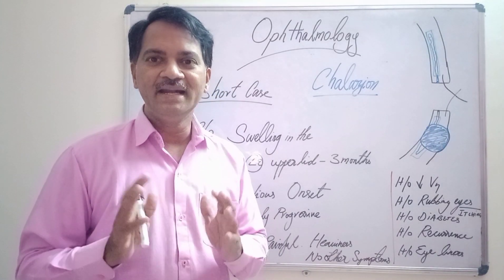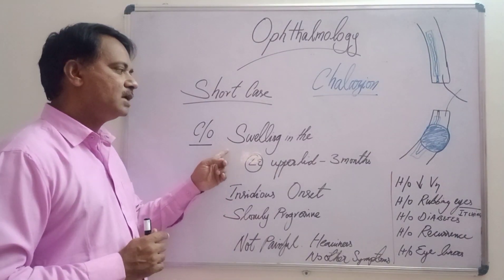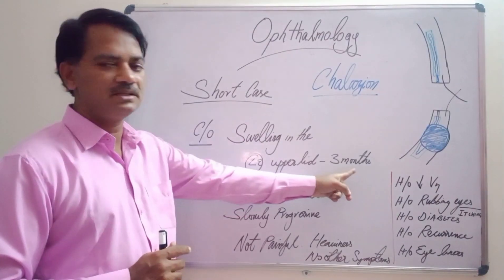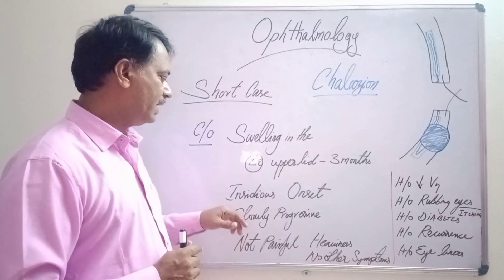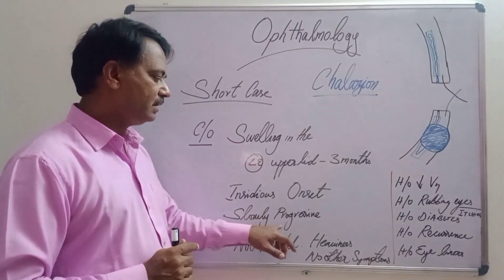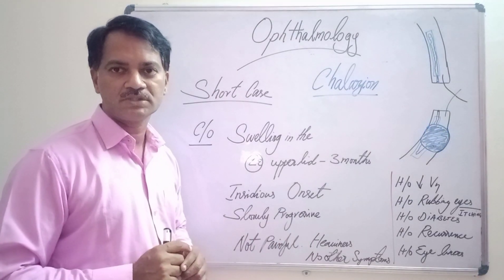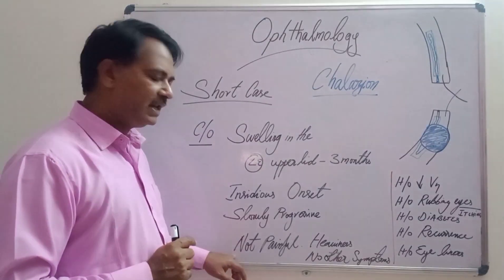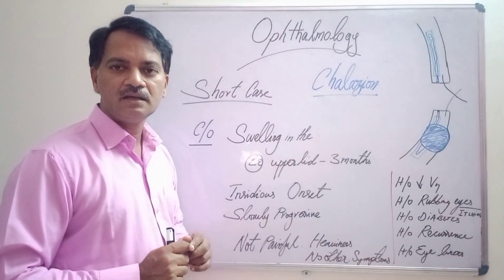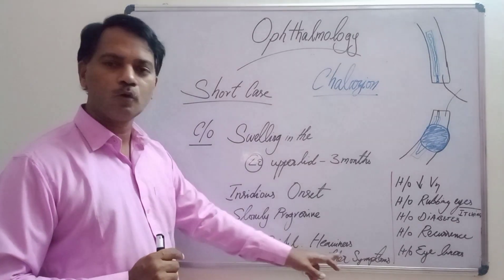He is a middle-aged adult male patient who presented with swelling in the left upper eyelid for the past three months. The swelling had an insidious onset and slowly progressed to attain its present size. The swelling was not painful, but there was some heaviness in his upper eyelid, and apart from that, there were no other symptoms.